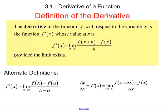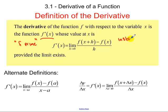Today we're going to be talking about the definition of a derivative and the derivative of a function f with respect to the variable x. This notation is usually called f prime of x, given by this formula — which should look familiar because that was our instantaneous rate of change.